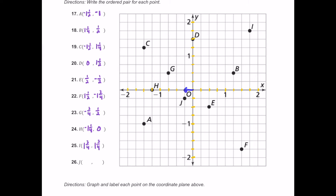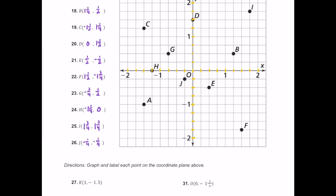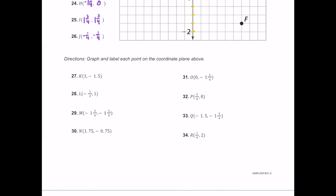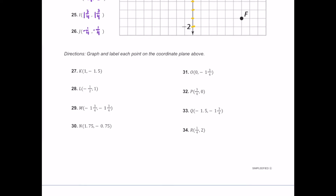Finally for J, start at the origin and just move to the left — it looks like negative one quarter — and then move down, which is also negative one quarter. This one is pretty close to the origin, so the ordered pair is negative one fourth comma negative one fourth.